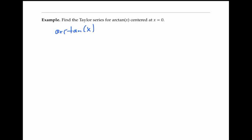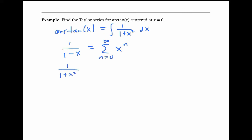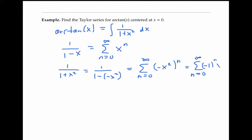Let's start by finding the Taylor series for arctan(x) centered at x equals zero. Since arctan(x) is equal to the integral of one over one plus x squared, one easy way to find the Taylor series for arctan(x) is to build it up starting with the formula for a geometric series: one over one minus x is the sum from n equals zero to infinity of x to the n. Now, one over one plus x squared is equal to one over one minus negative x squared, so I can plug negative x squared in for x in this power series, and I get the sum from n equals zero to infinity of negative x squared to the n, which simplifies to the sum from n equals zero to infinity of negative one to the n times x to the 2n.